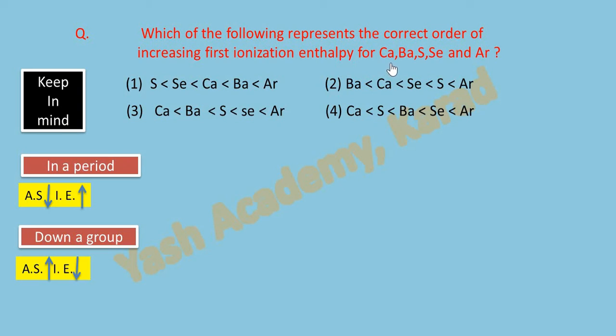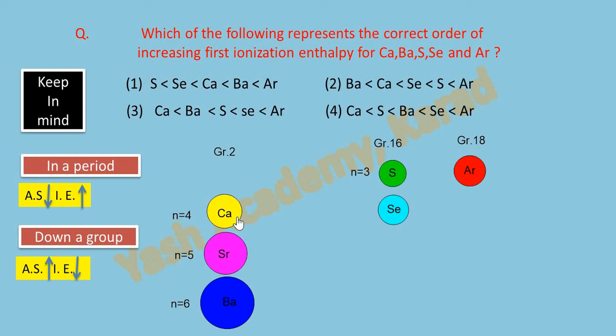So these are the elements: calcium, barium, sulfur, selenium, and argon. We are asked for first ionization enthalpy for these elements. Now argon is the last element with group 18 and has maximum ionization enthalpy because all the electrons in orbitals are completely filled. It has maximum stability, and much more amount of energy will be required to detach or remove valence electrons.